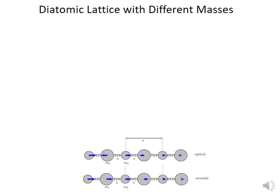We solved the case where all masses are identical but springs are of two types. In the assignment, you will be asked to solve the case where the masses are different (m1 and m2) but all spring constants are the same. The results again yield two branches — optical and acoustic — with similar physics: near k = 0, the optical branch has the two masses displaced in opposite directions, while in the acoustic branch both masses move in the same direction.